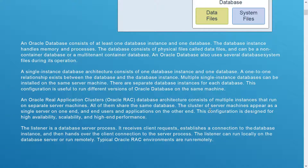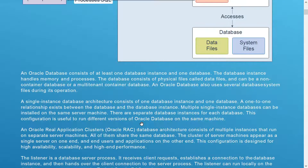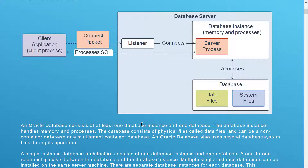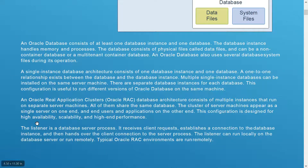The cluster of server machines appears to be a single server to the end user. This configuration is designed for high availability, scalability, and high-end performance. In situations where there are heavy loads on the database servers, and to fulfill high availability and scalability requirements, we can use Oracle RAC database.